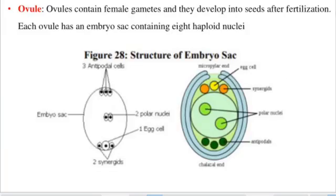We can take a look at the structure of the embryonic sac, which the ovule contains. This is the structure of the embryonic sac, and this is what the ovule contains. We are now done looking at the parts of the flower and the functions of these parts.